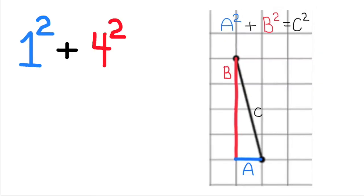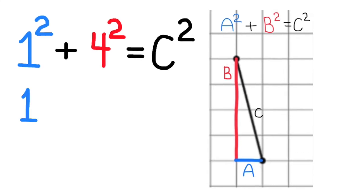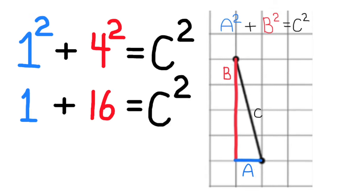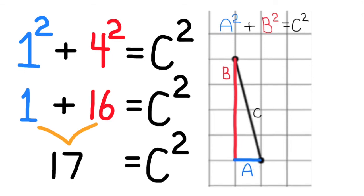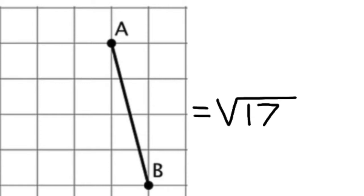Since a is one unit and b is four units, we have one squared plus four squared equals c squared. One squared is 1 and four squared is 16, so 1 plus 16 equals c squared. Since 1 plus 16 is 17, c squared equals 17, which means c equals the square root of 17. Side length c represents the original line segment AB, so the length of AB is the square root of 17.